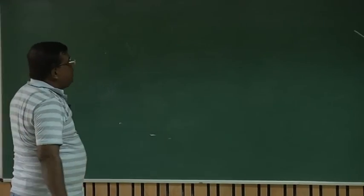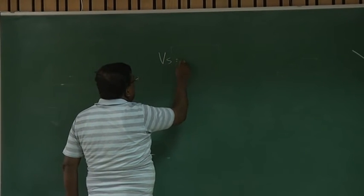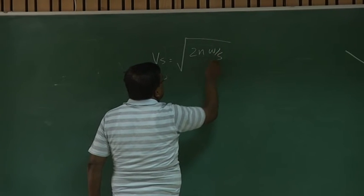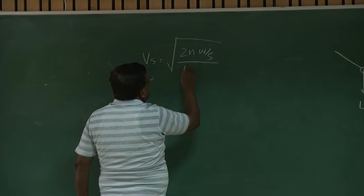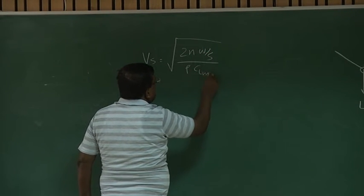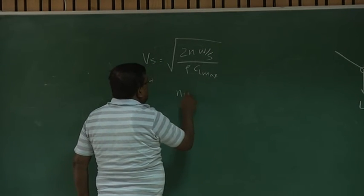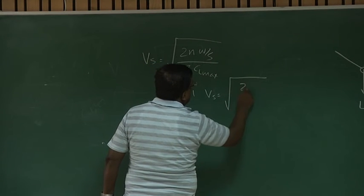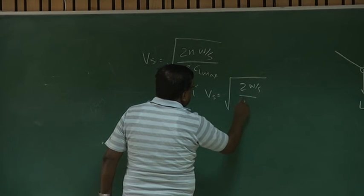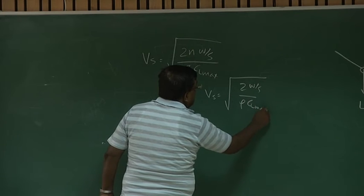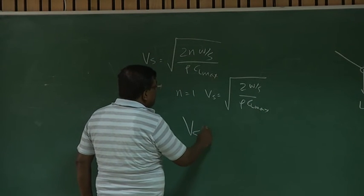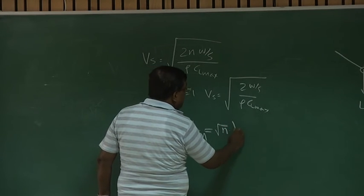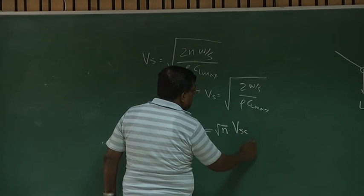So if I summarize, what you have seen: V stall is square root of 2NW by S by rho C_L max, where for N equal to 1 is our classical V stall, which is square root of 2W by S by rho C_L max. Also, we have seen Vs for maneuver is square root of N into V stall cruise based on the cruise.